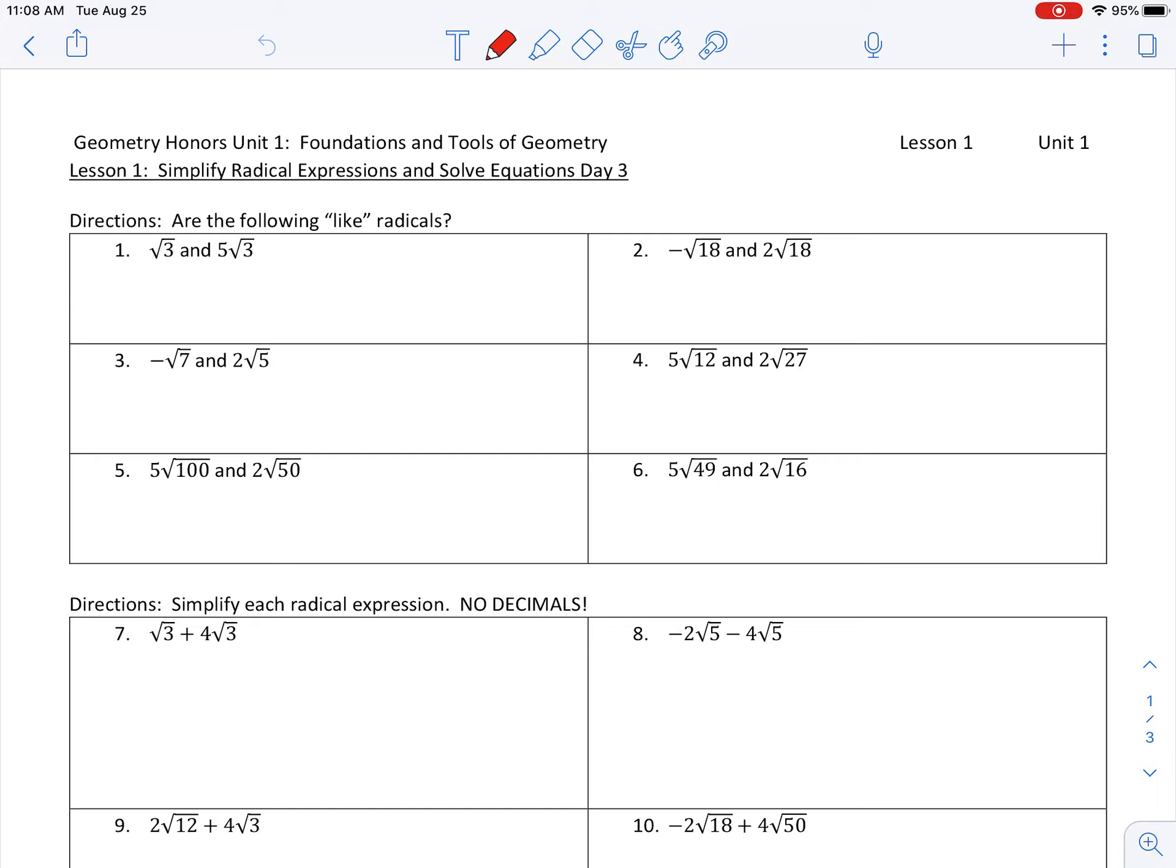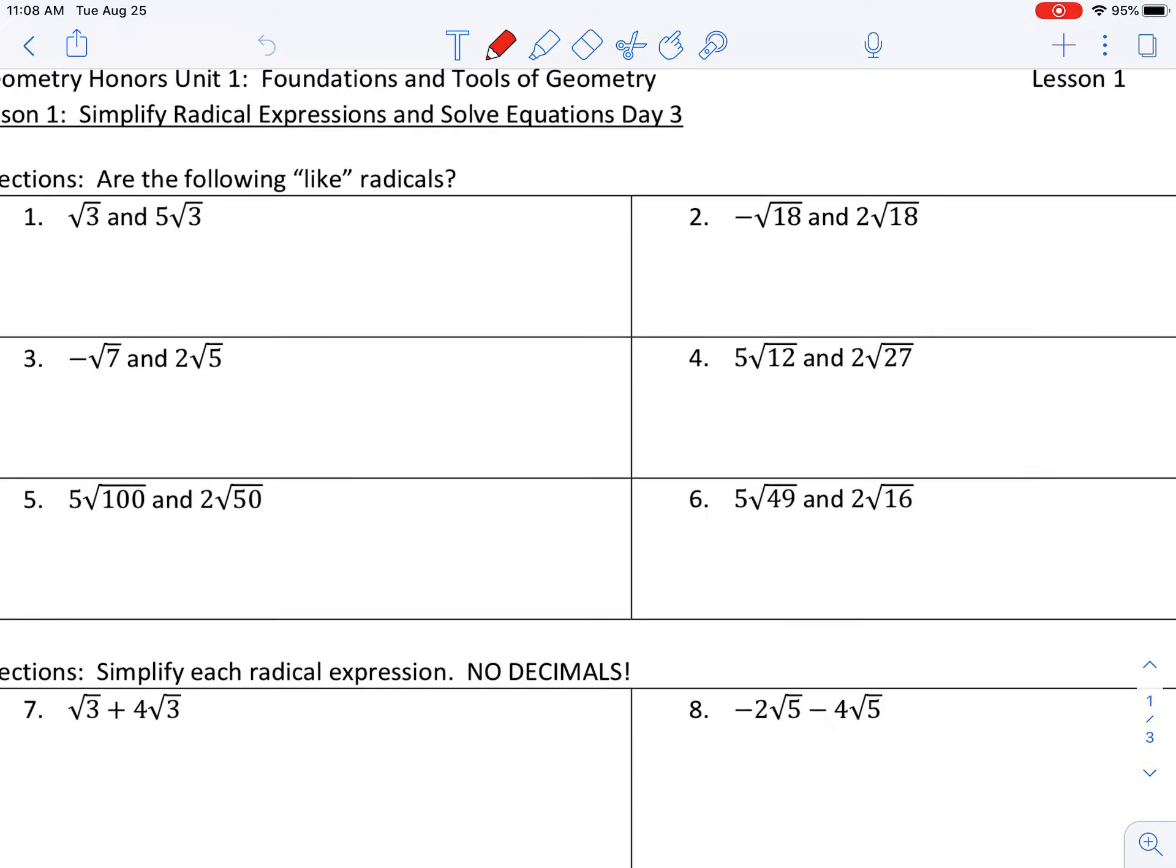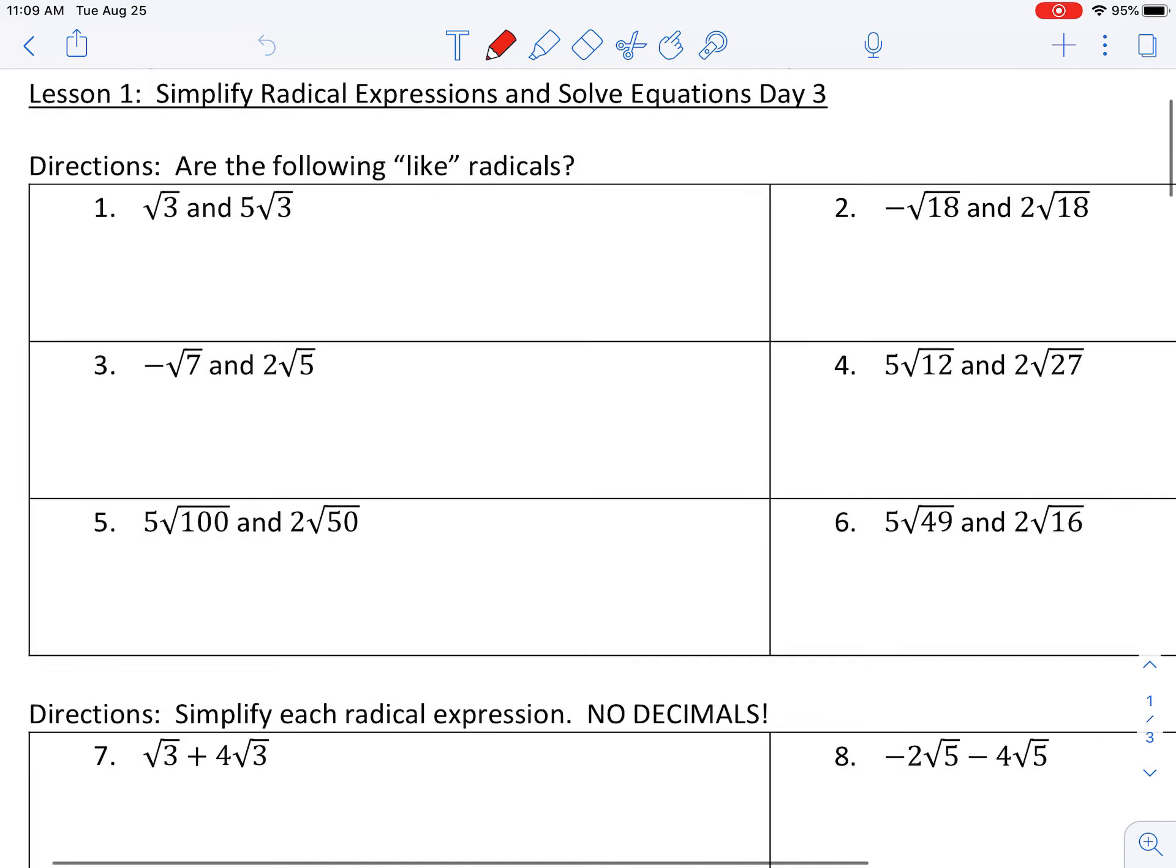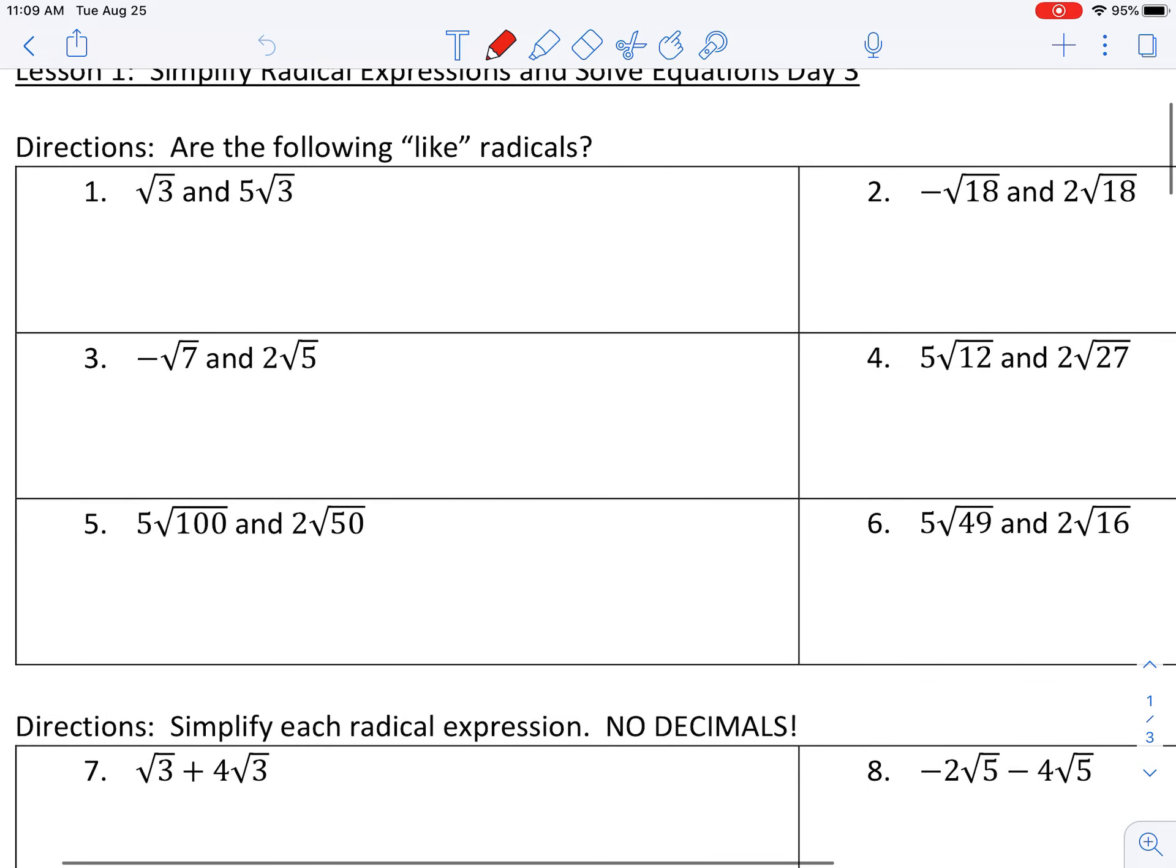You can only add like terms together if they have maybe the same variable. So it's the same idea with radicals. Can we determine if these radicals are considered to be like? So let's look at example one right here. All we're doing right now is a yes or a no. Are the following radicals like radicals? So one root three and five root three. What would you think? Yes or no?